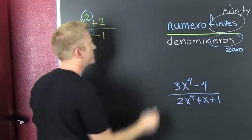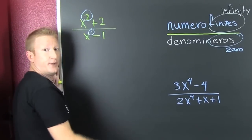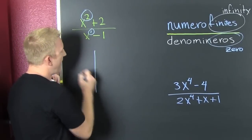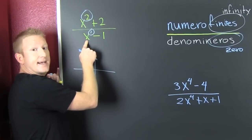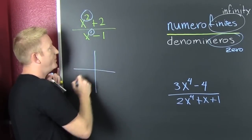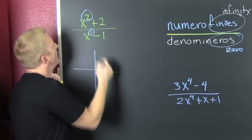The numero finis or the denomineros? The numero finis win. And what? The asymptotes. To get the asymptote, you do some division and then it'd be slant or oblique.